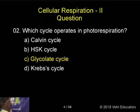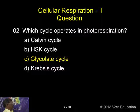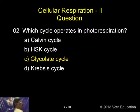Which cycle operates in photorespiration? Calvin cycle, HSK cycle, glycolate cycle, Krebs cycle. The correct answer is C, glycolate cycle.